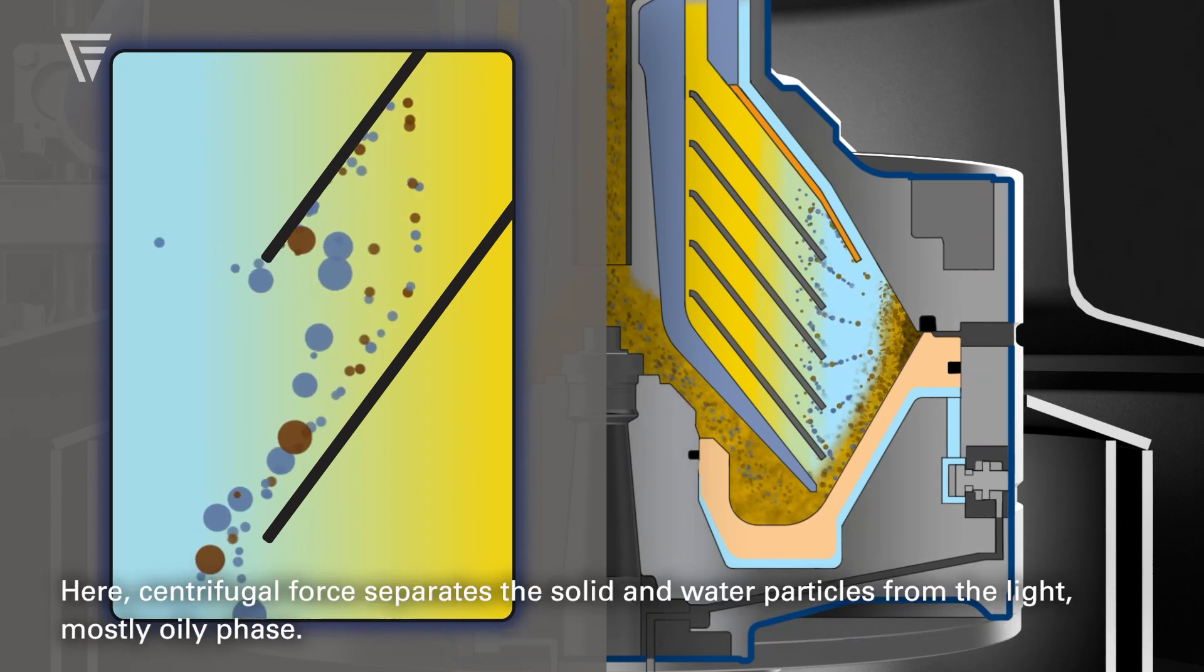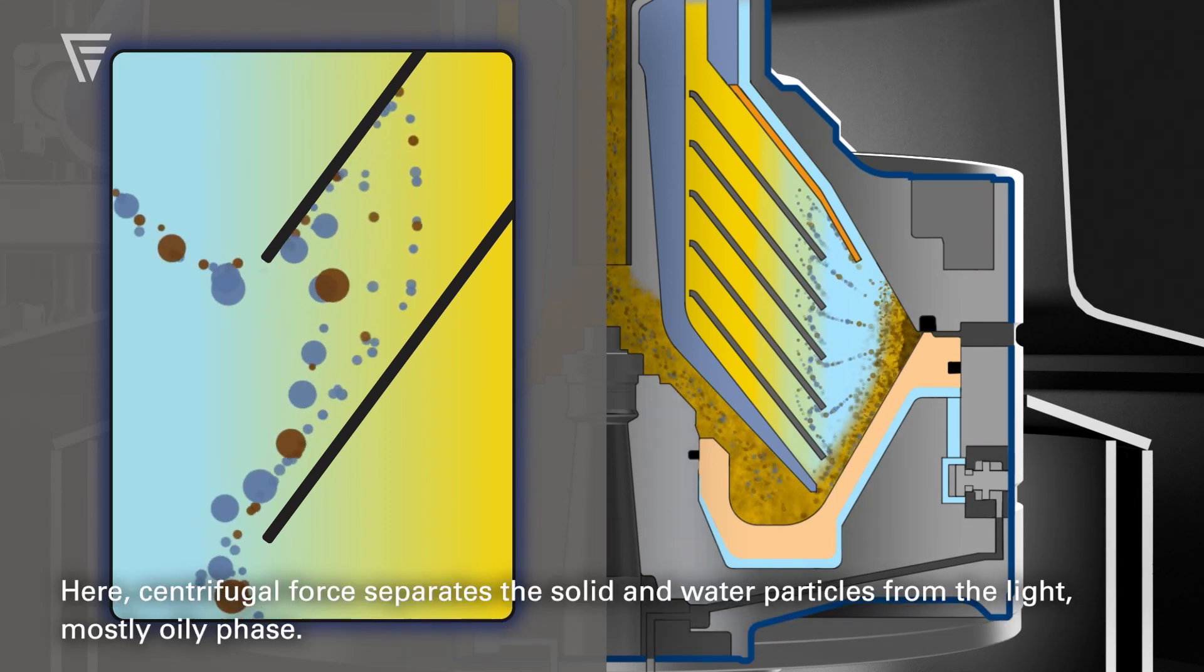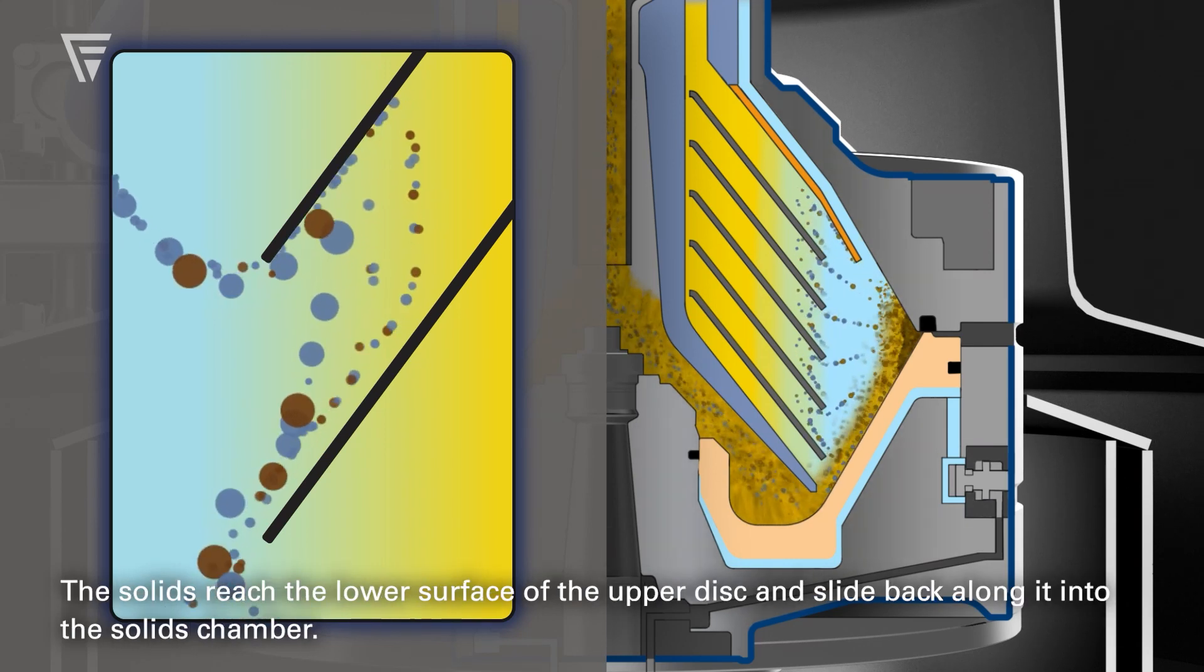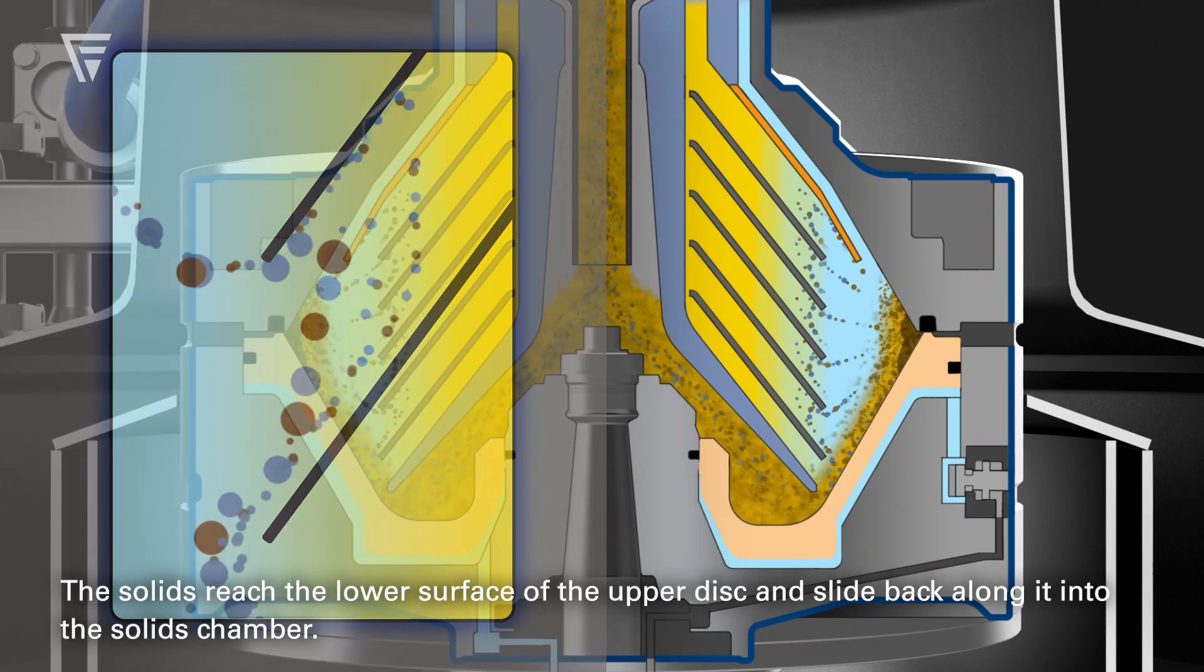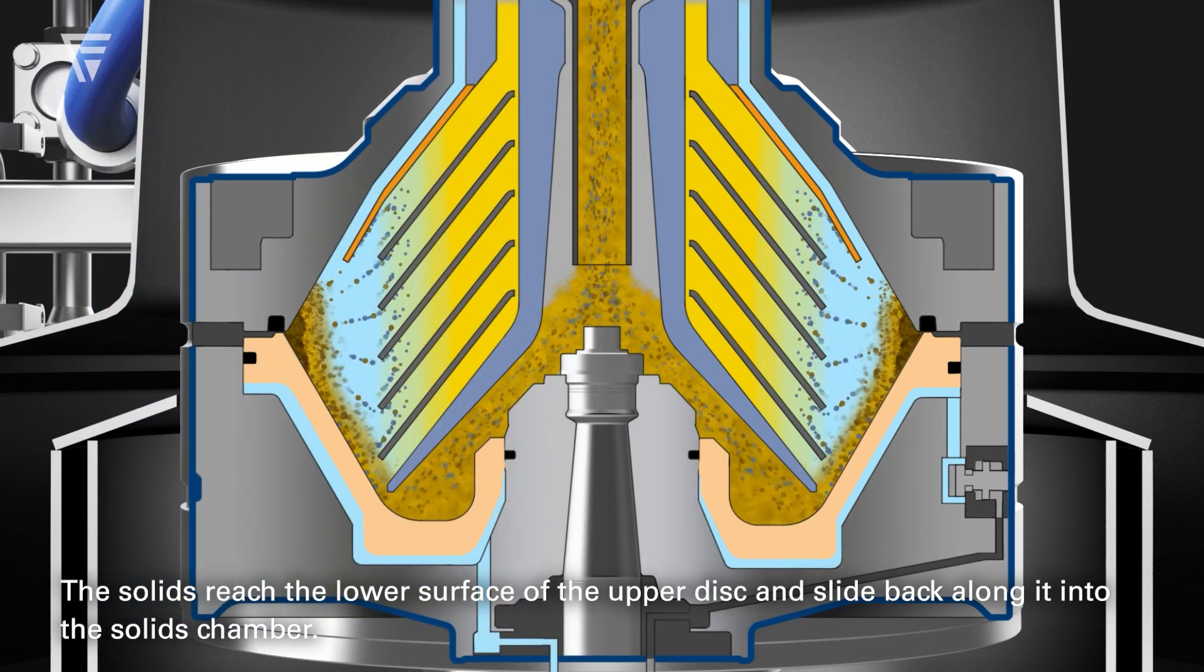Here, centrifugal force separates the solid and water particles from the light, mostly oily phase. The solids reach the lower surface of the upper disk and slide back along it into the solids chamber.